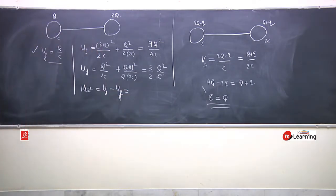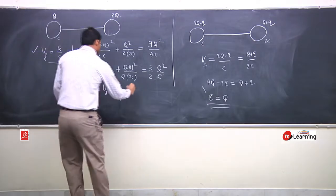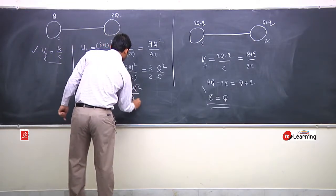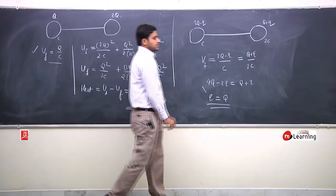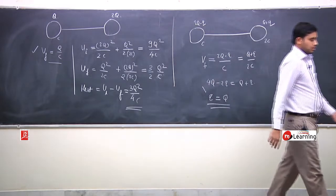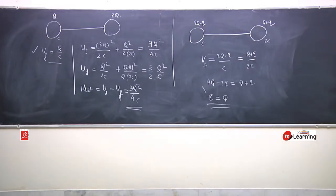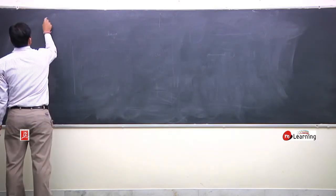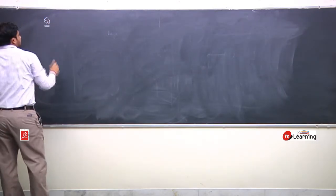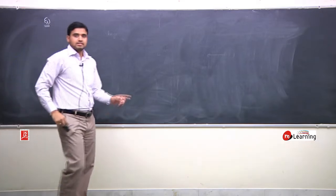Difference lelo, right? Kya milega - 3Q square by 4C. So, itni heat generate hogi. And heat generate kyu hogi hai? Charge ke flow ke karan. Charge flow karega, to heat generate hogi. Ek aur example lete hain. Dhyan se samajhna.